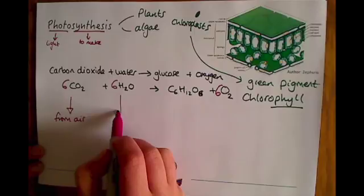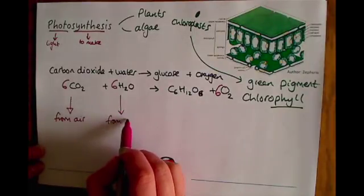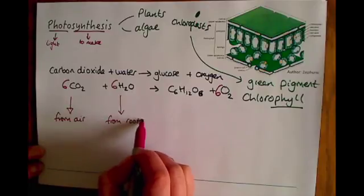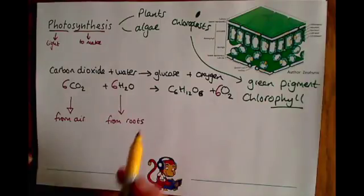It gets the water from the soil or from its roots, and that will be transported then through the xylem, one of the tissues we looked at before, to where it's needed in these plant cells for photosynthesis to happen. The main point of this process is to make this important sugar substance called glucose.